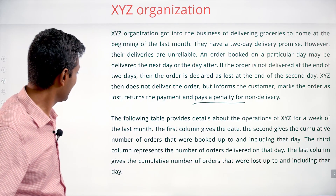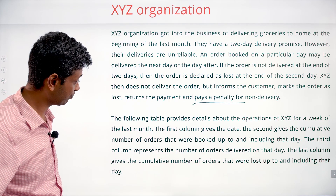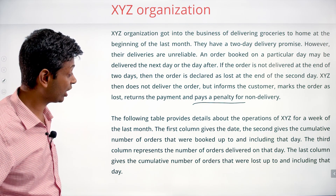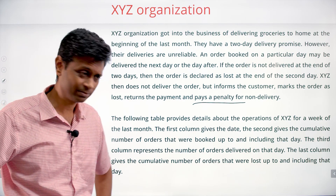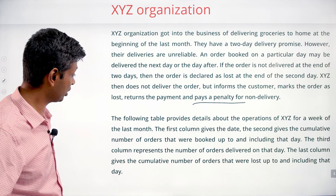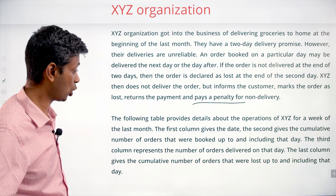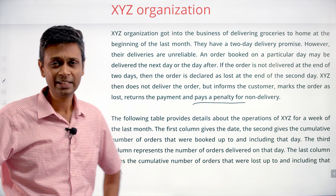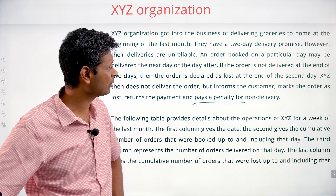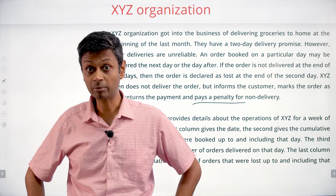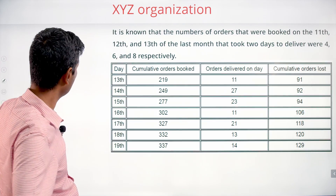The following table provides details about XYZ's operations for a week of last month. The first column gives the date. The second gives the cumulative number of orders booked up to and including that day. The third column represents the number of orders delivered on that day. The last column gives the cumulative number of orders lost up to and including that day. This will make more sense once we see the table.